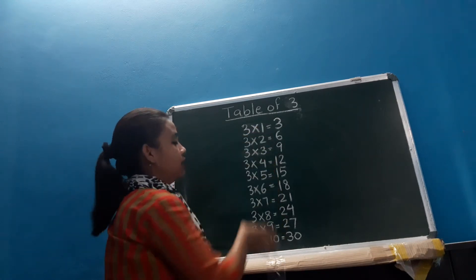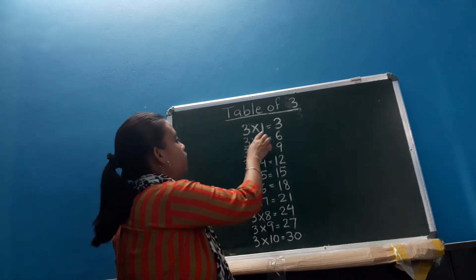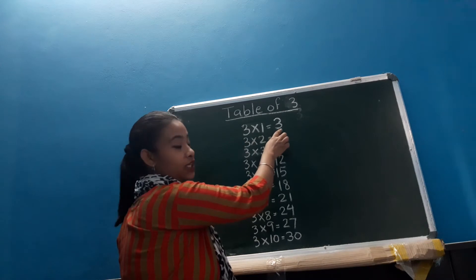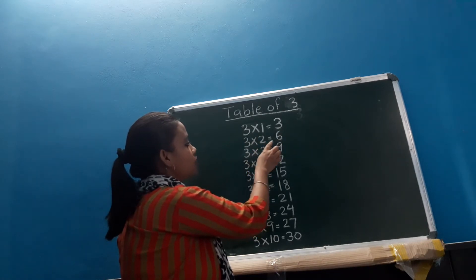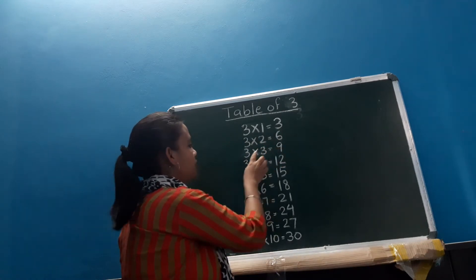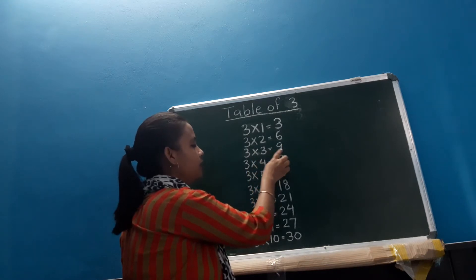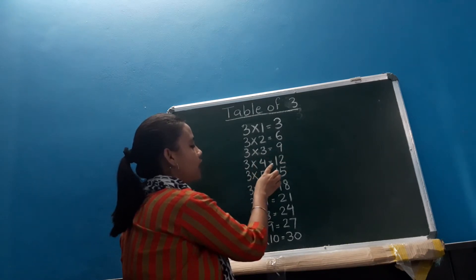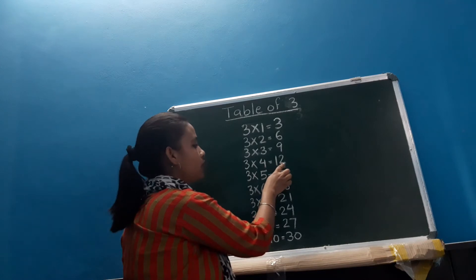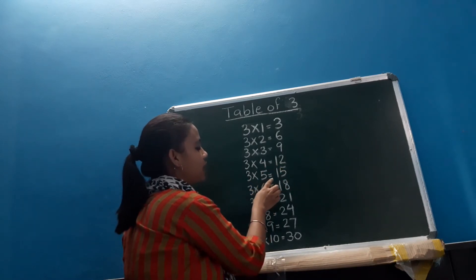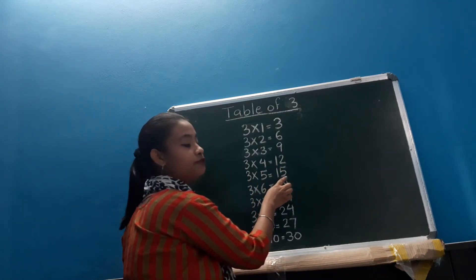So let's start. 3 1's are 3, 3 2's are 6, 3 3's are 9, 3 4's are 12, 3 5's are 15.